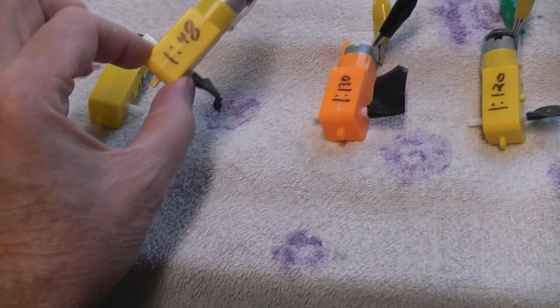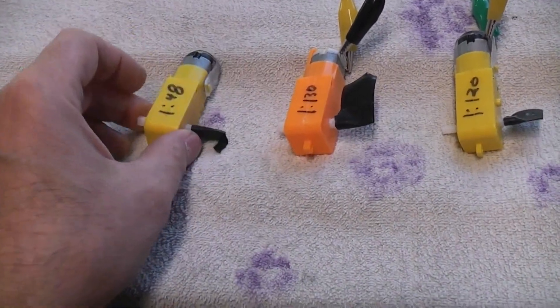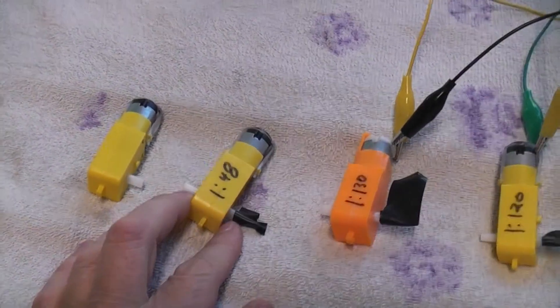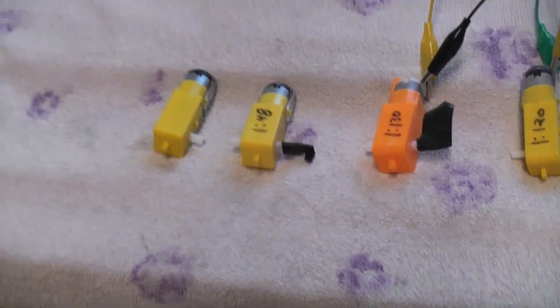The one we call 48 to 1 here in the United States, but apparently in China it's 1:48, is the fastest and most common. Almost any gear motor you order off eBay, this is what they're going to send you, even if it isn't what you want.